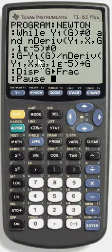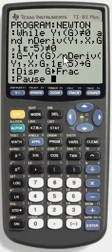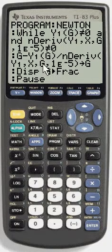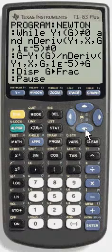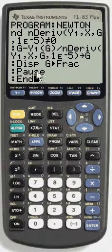Do g minus y1 of g over the derivative of y1 with respect to x at the value g for the same tolerance. Store that to g and then display it as the current guess and it will keep going until it's done.